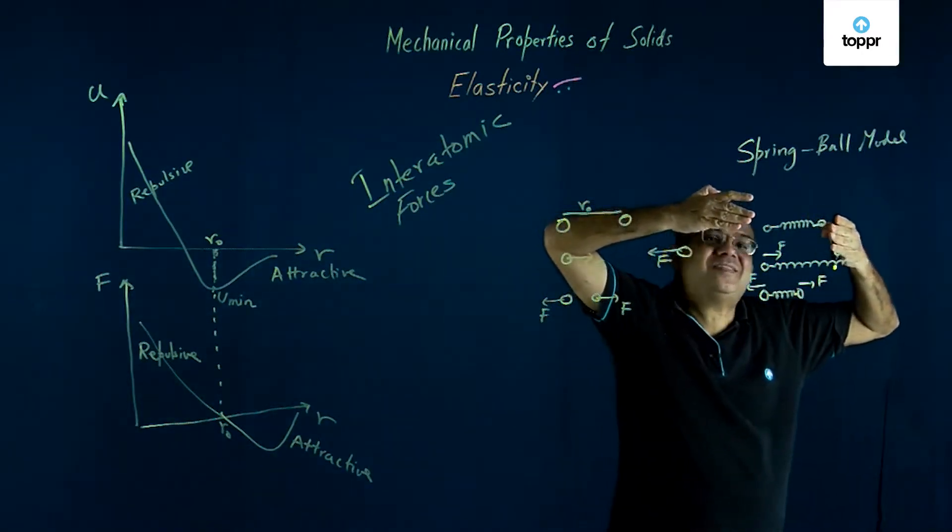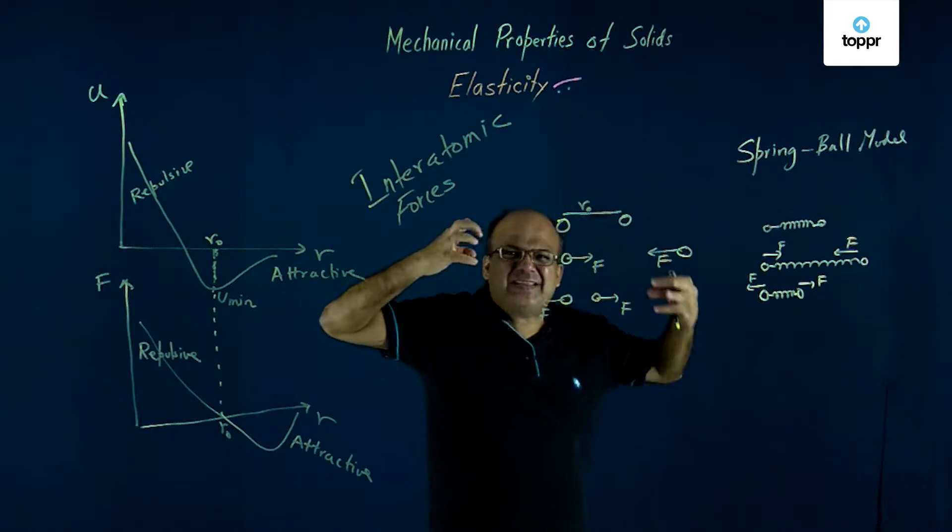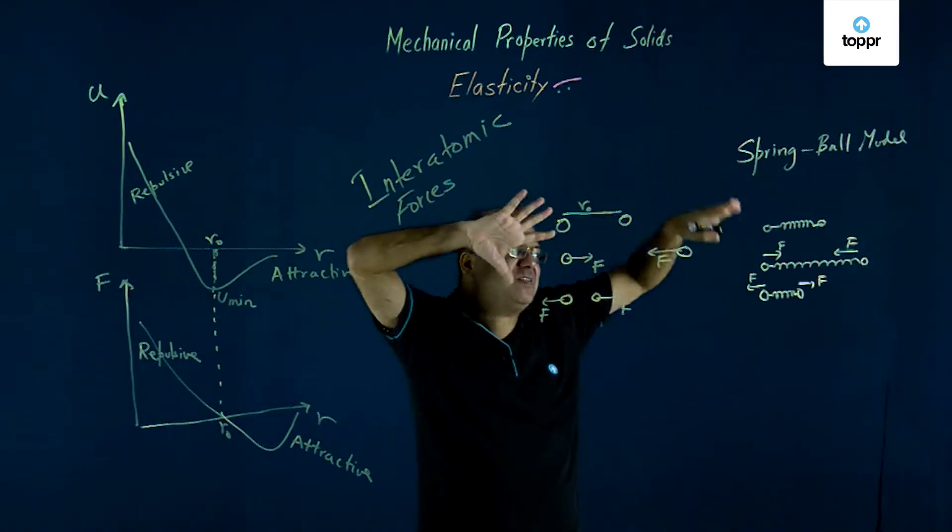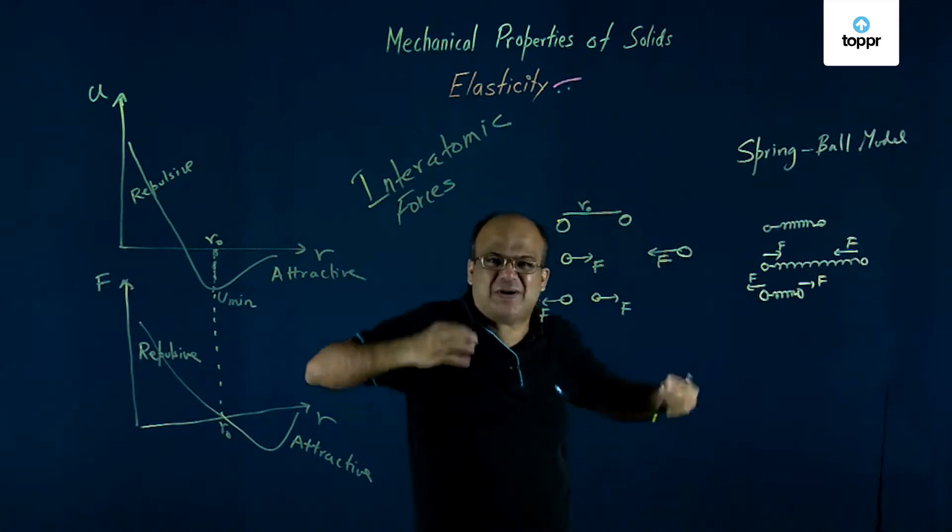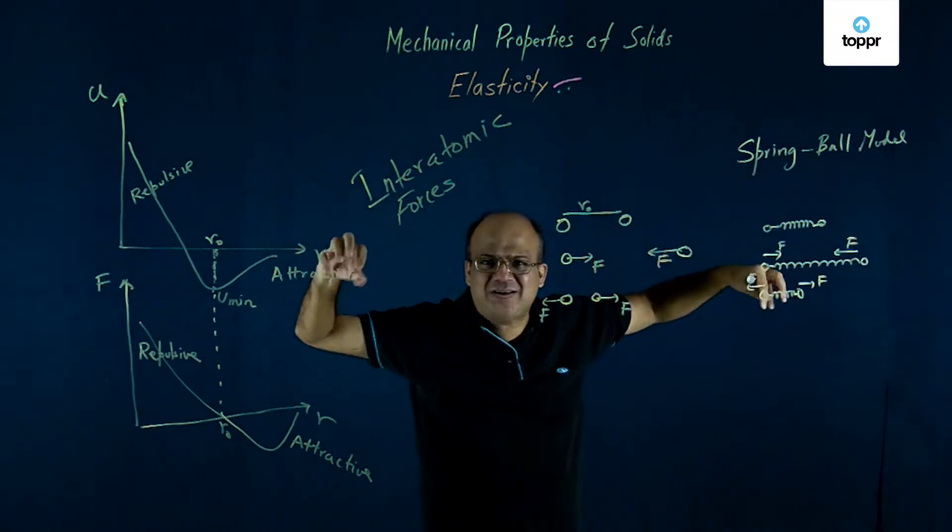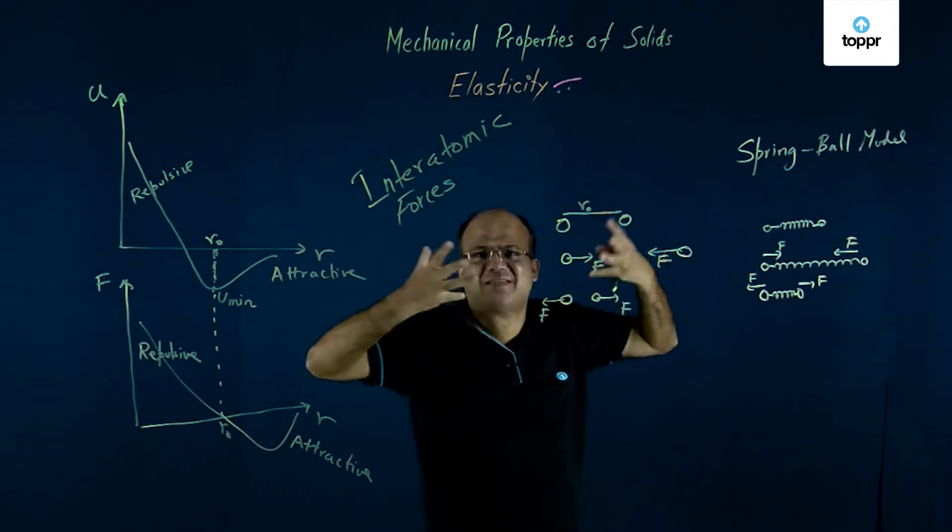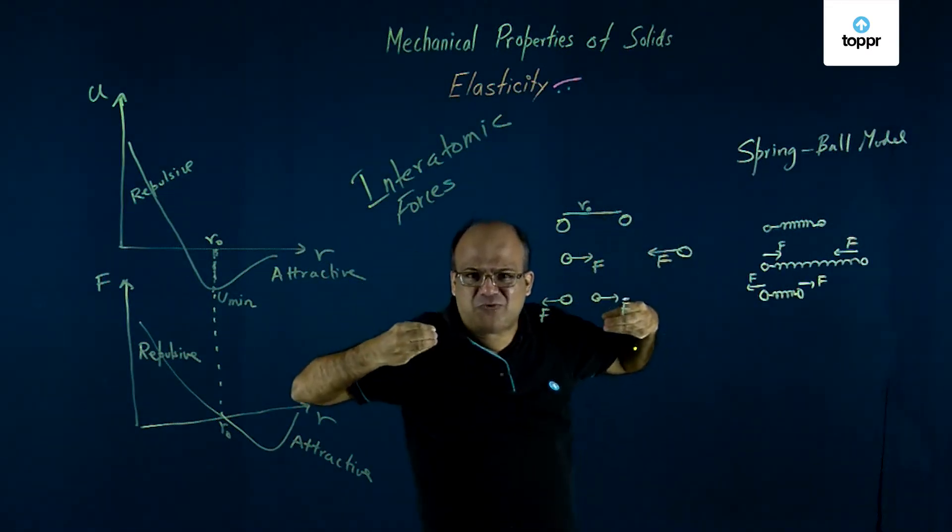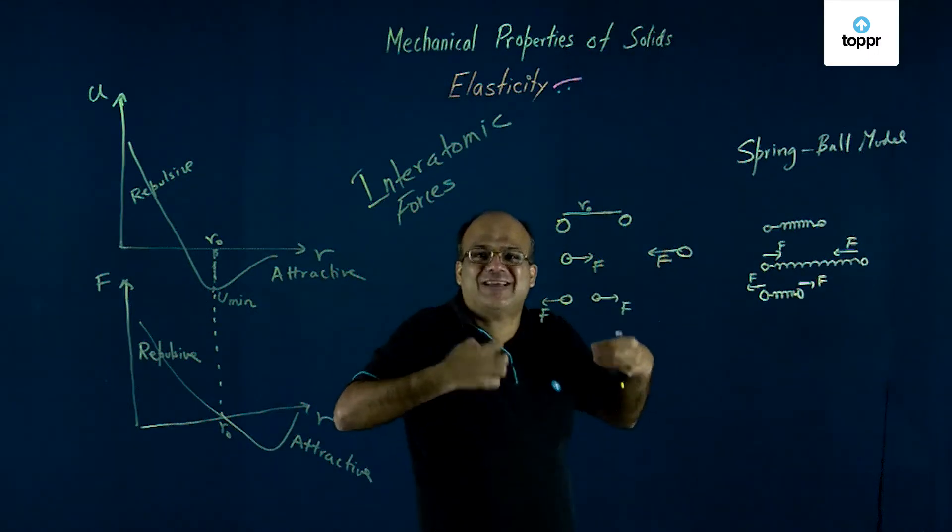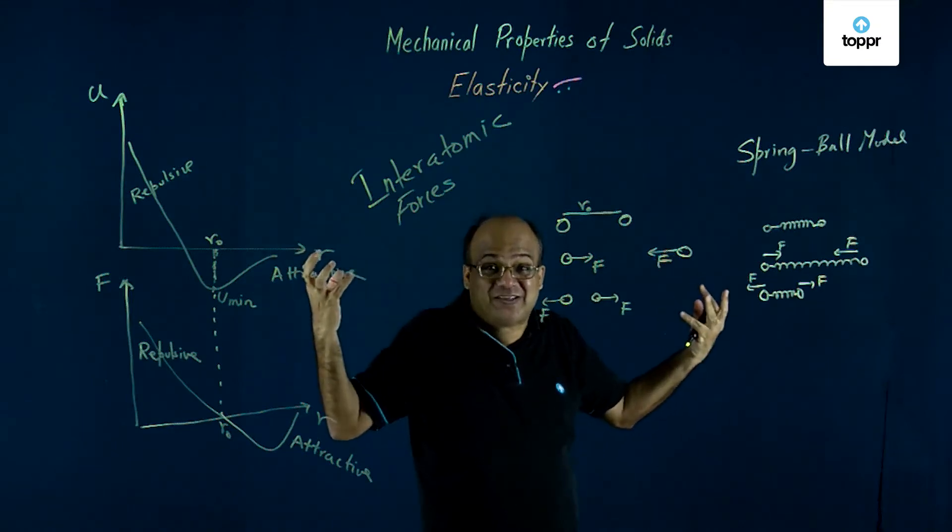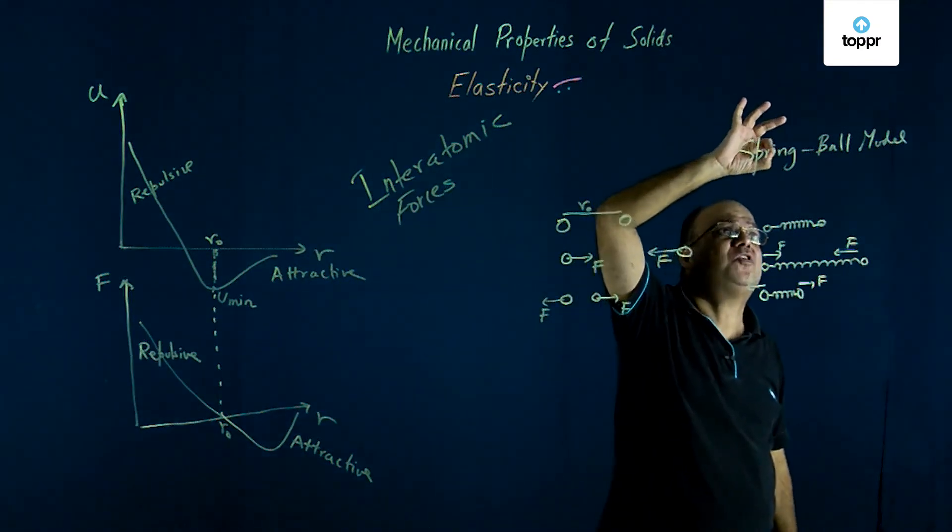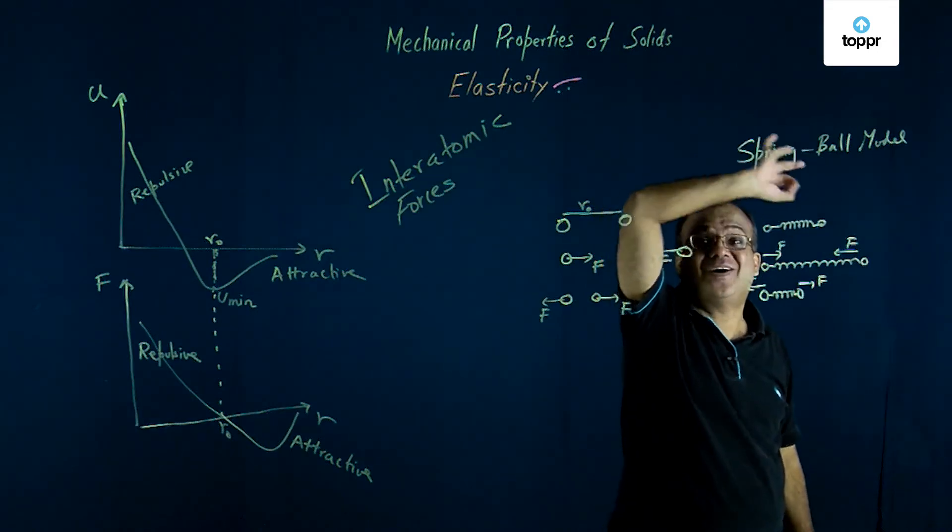They will come back to this position again. So we can imagine that the atoms are connected to each other by springs in 3D space. We have simplified the understanding, but in 3D space they are connected to each other by springs. You pull them apart, the spring force is attractive, that signifies that the interatomic force is attractive. If you push them closer, the spring force is repulsive, that is the interatomic force is repulsive. So we can understand this elastic behavior in terms of spring-ball model of a solid.